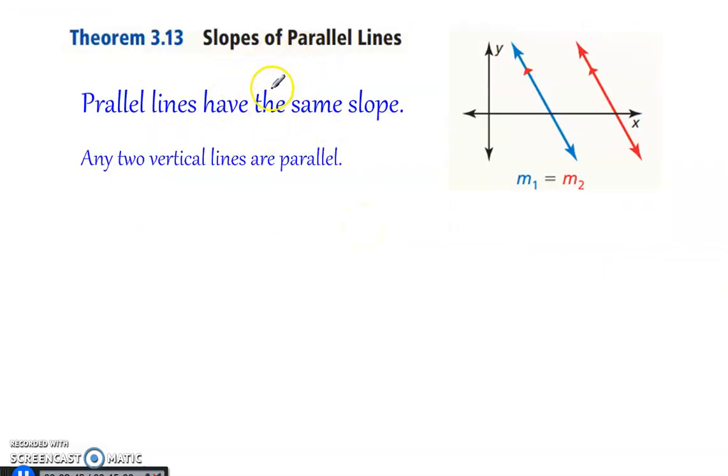All right, slopes of parallel lines. Parallel lines have the same slope. Now we have to have a little disclaimer to say vertical lines are parallel, because technically vertical lines don't have a slope, right? But we understand if the lines are vertical, they're going to be parallel, or two lines are horizontal, they're parallel. So parallel lines have the same slope. So M1 is equal to M2.